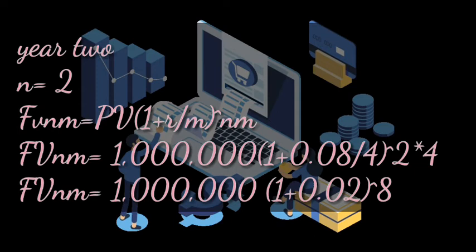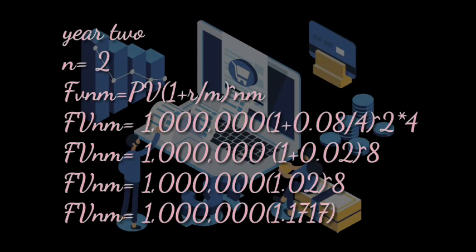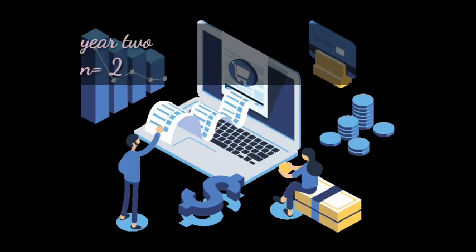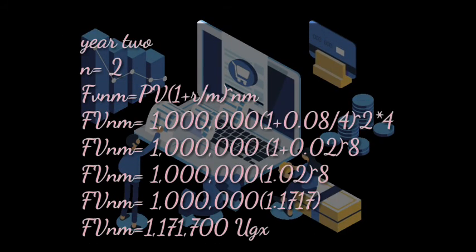Dividing 0.08 by four gives 0.02, and multiplying two by four gives eight. Using a calculator, our final answer is one million one hundred seventy-one thousand seven hundred Uganda shillings — that will be the money on the account by the end of year two after multi-compounding.